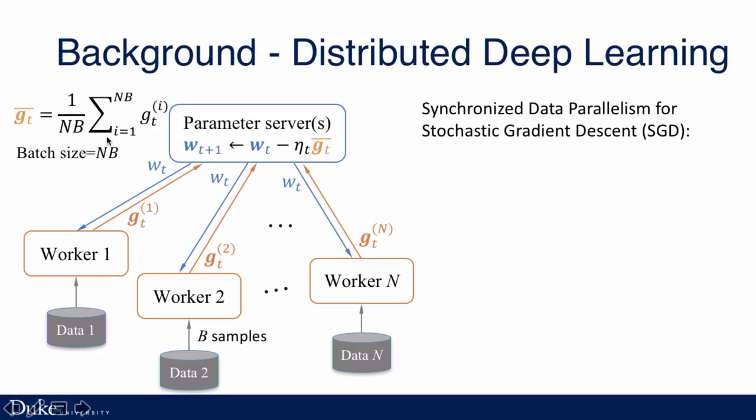A batch of training samples. To accelerate SGD, we may want to use the computing power of distributed systems and split the training samples to multiple workers. Typically, in synchronized data parallelism for SGD, the training happens like this.